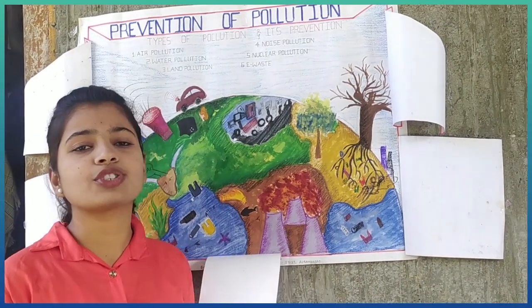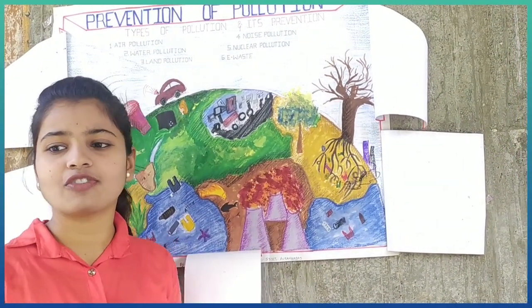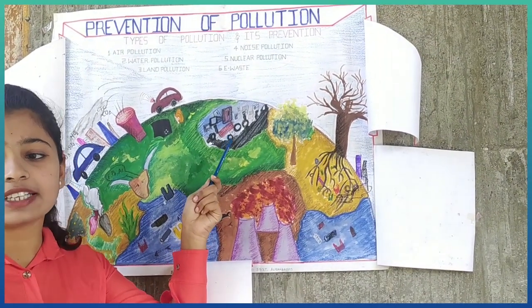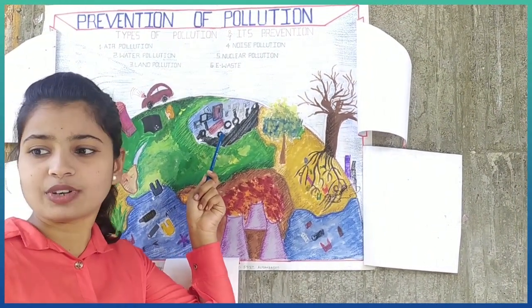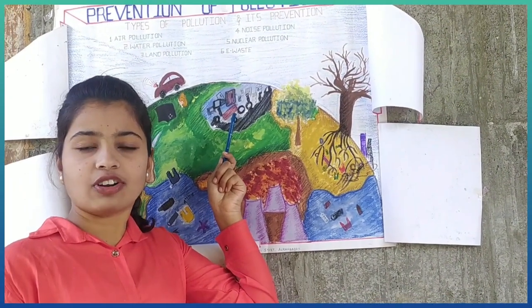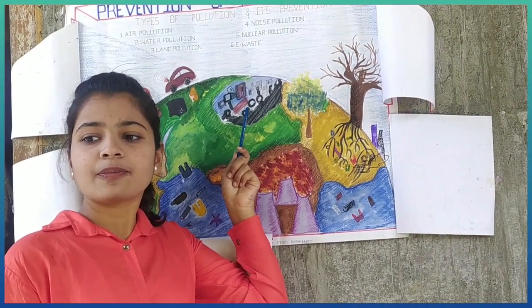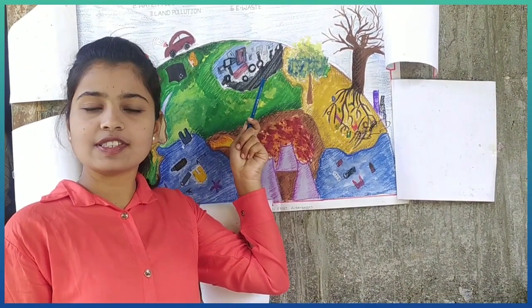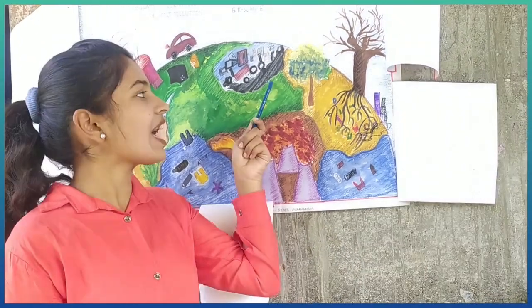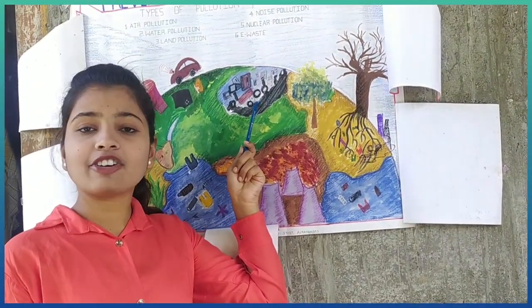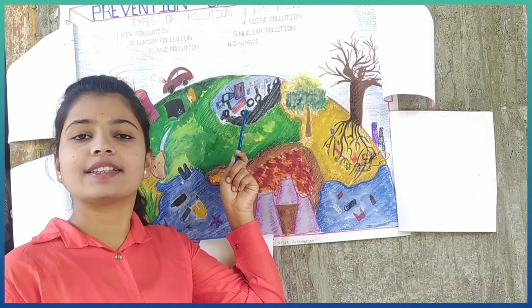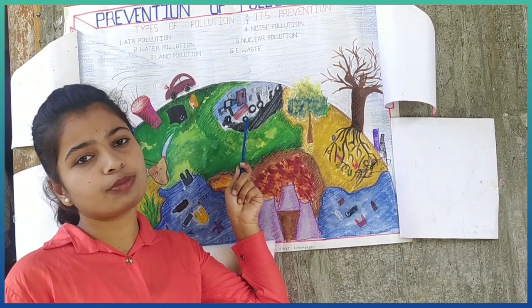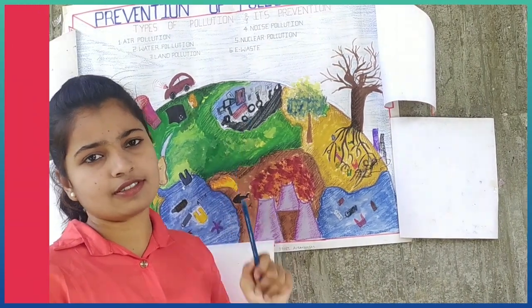The last type of pollution we are going to see the causes of is e-waste. E-waste is nothing but waste material like discarded computers, office electronics equipment, entertainment electronic devices, mobile phones, television sets, and refrigerators. Also, electronic scrap components such as lead, cadmium, beryllium, or brominated flame retardants contribute to e-waste.